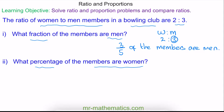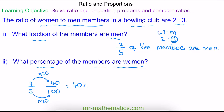For part 2 — what percentage of the members are women? With the same ratio of 2 to 3, of the 5 shares, 2 of them are women. To write this as a percentage, we need it as a fraction of 100, so we'll use equivalent fractions. We multiply the denominator by 20 and the numerator by the same, giving us 40 over 100, which is 40% of the members are women.